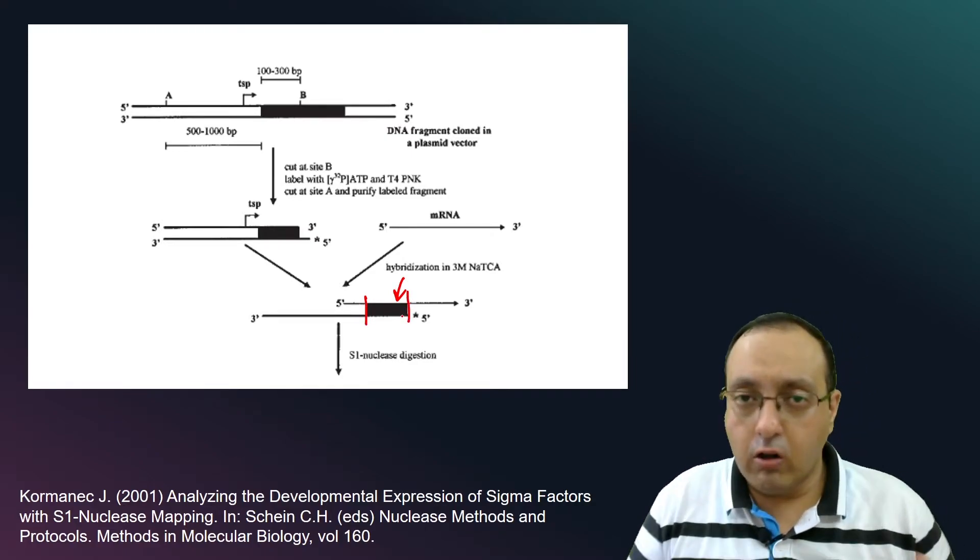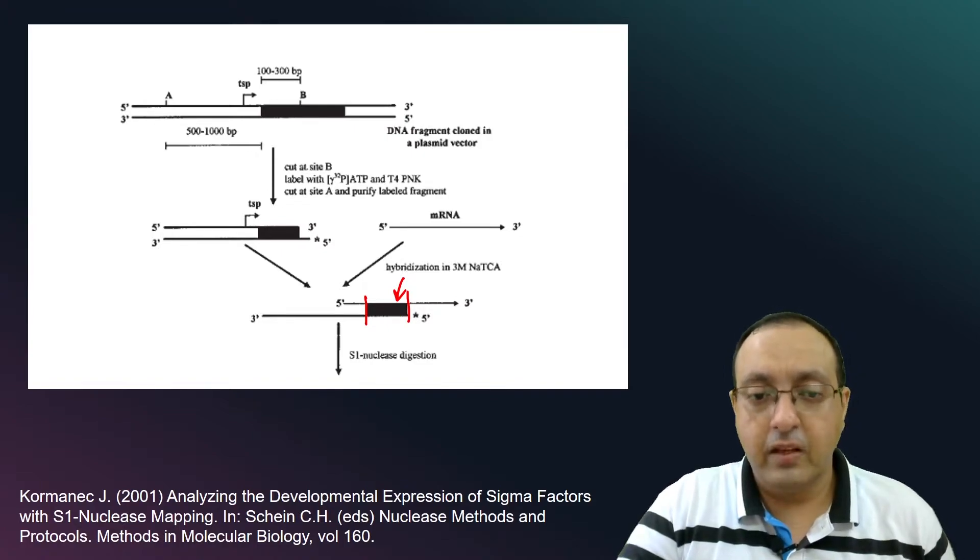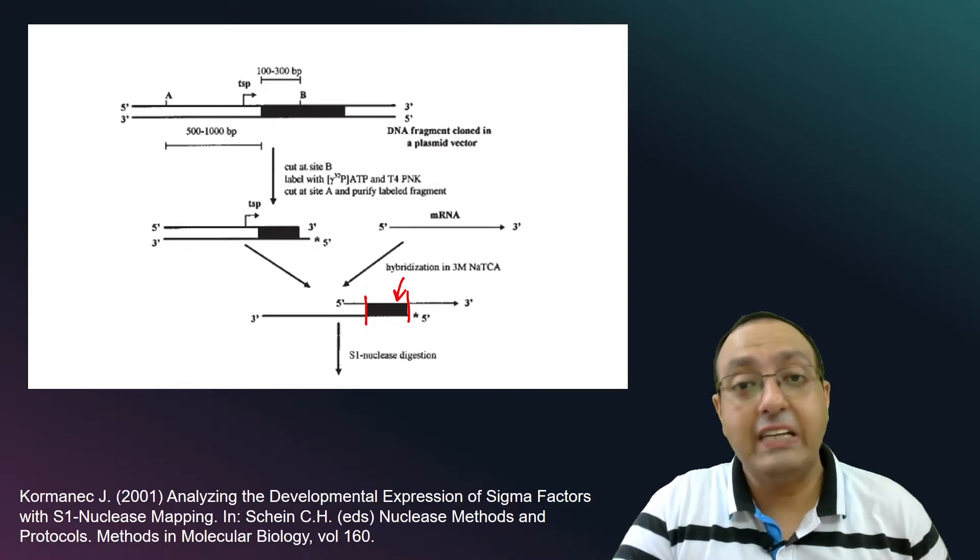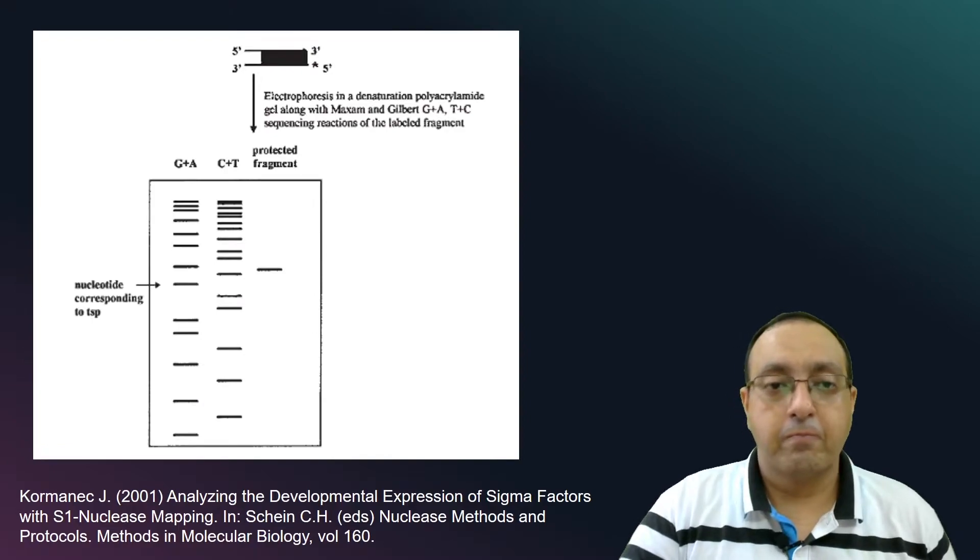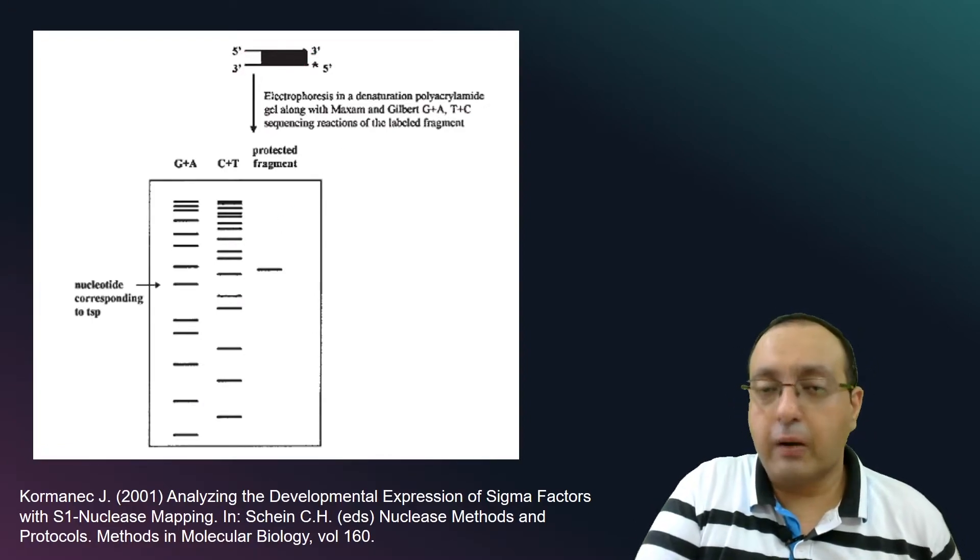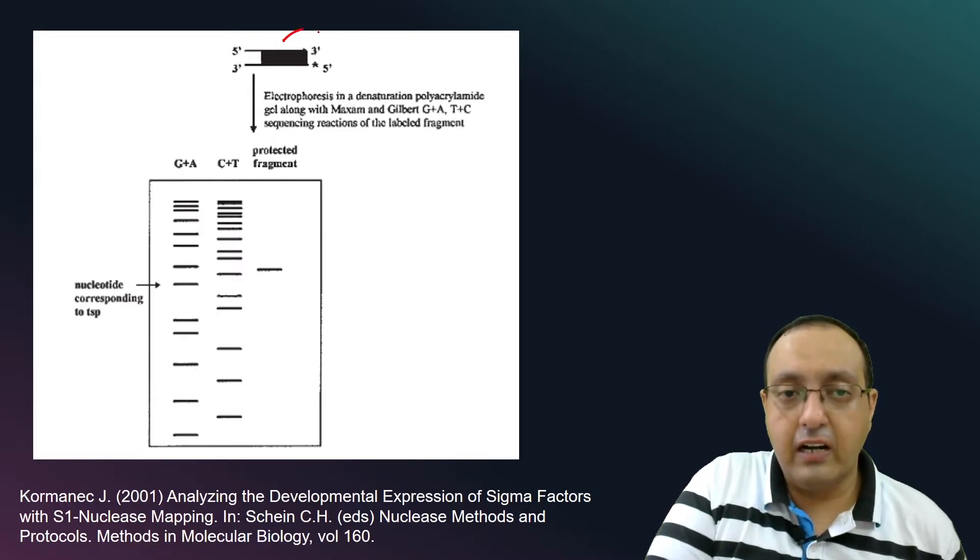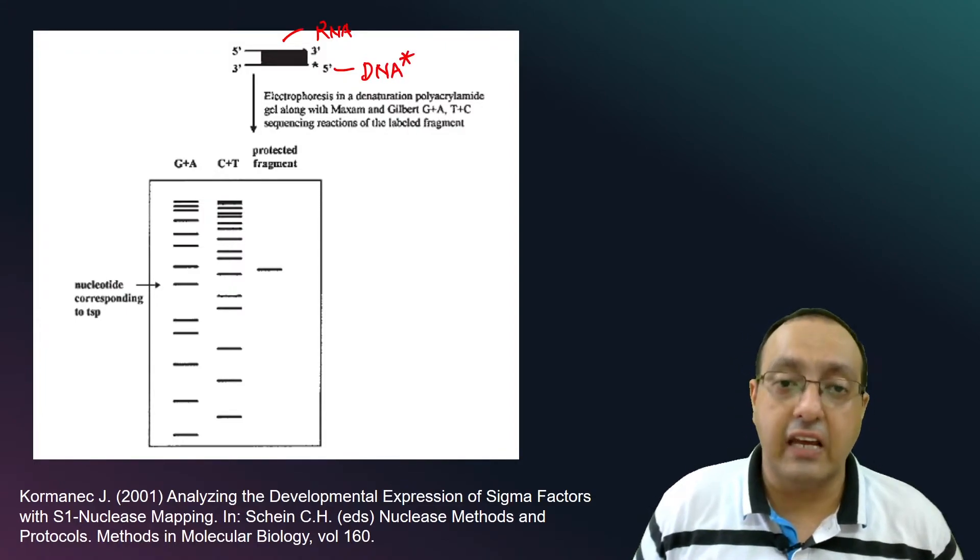Now there will be a double-stranded portion here. But all the rest of the information is single-stranded. Now we will digest it with nuclease S1. So we have five prime to three prime, three prime to five prime. Here is our RNA. Here is our labeled DNA. I'm just writing it as a star just to indicate that it is labeled.